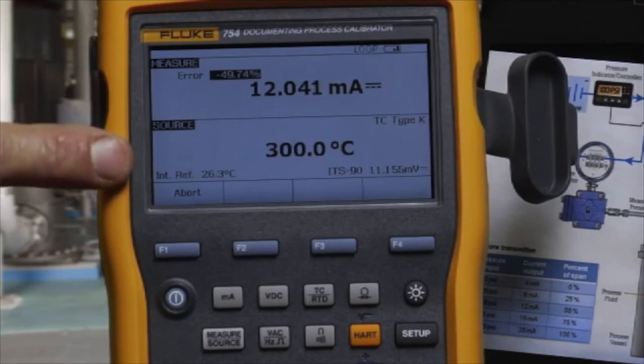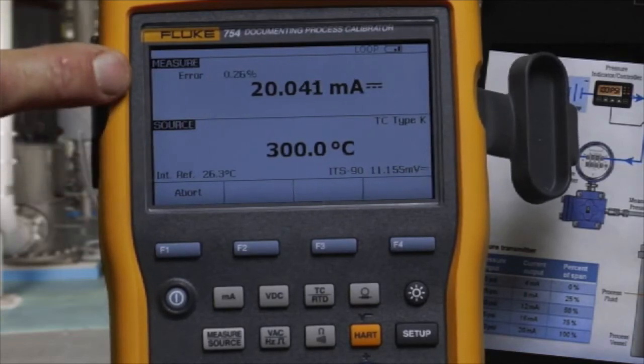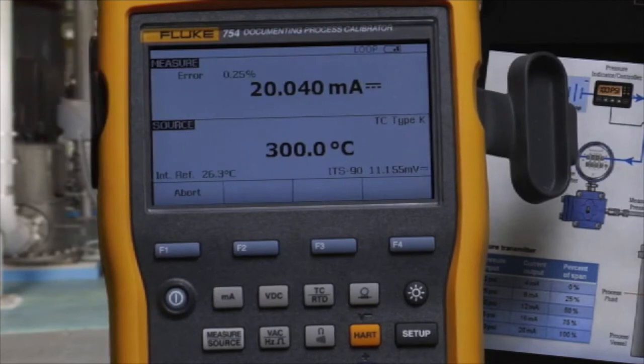Then change the temperature source to the full scale input value, measure 20 milliamps and record the measurement error.